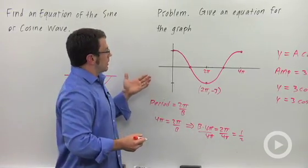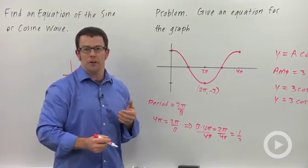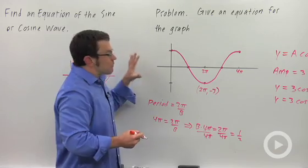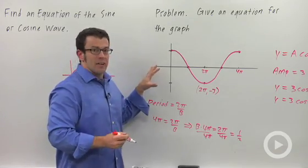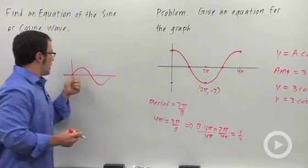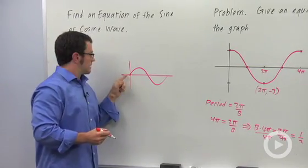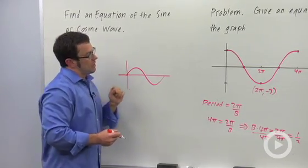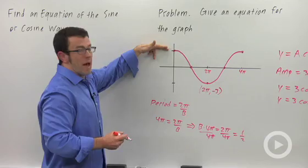When you're finding the equation for the graph of the sine or cosine curve, you have to first try to recognize whether it's a sine or cosine curve. A sine curve would start at the origin like this. It starts on an intercept. Whereas a cosine curve starts at its max, or its min if it's reflected.